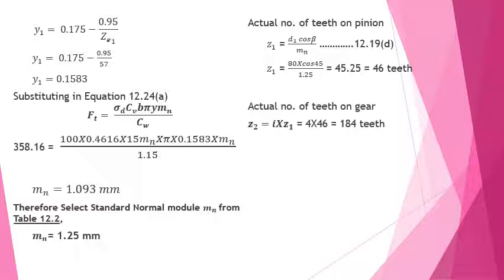Referring to table 12.2 for standard module values, the nearest preferred value is mn = 1.25 mm. Once the standard normal module is selected, the actual number of teeth on the pinion is found from equation 12.19: Z1 = D1 × cos(beta) / mn = 80 × cos(45°) / 1.25 = 45.25, rounded up to 46 teeth. Therefore Z2 = i × Z1 = 4 × 46 = 184 teeth.